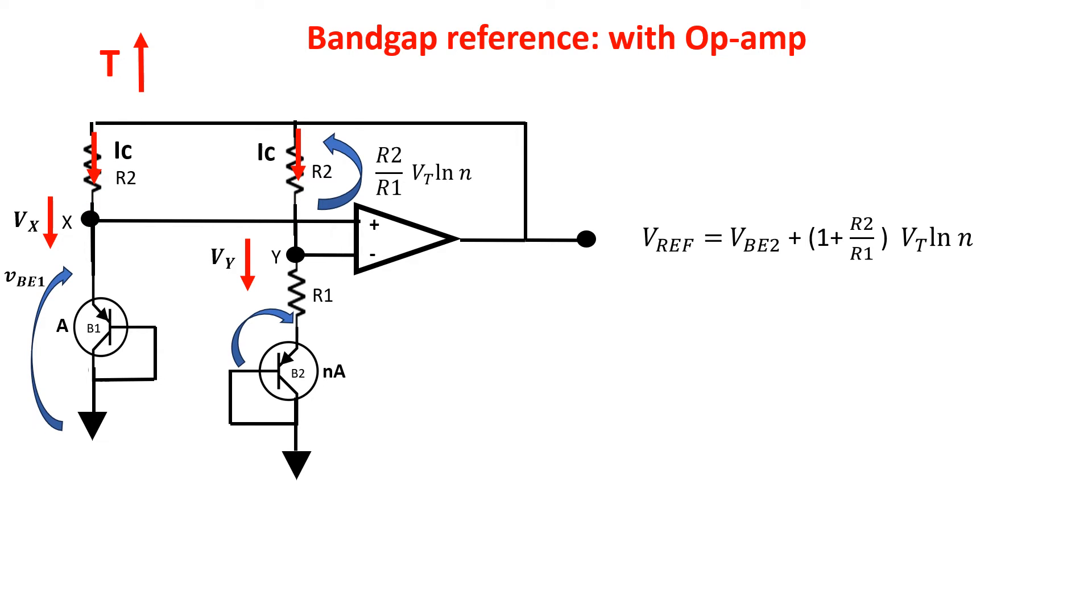The explanation is that VBE2 decreases much more than VBE1, being V2 N times larger than V1, and we have a voltage increase on R1 proportional to the thermal voltage VT. So we have a raise of current which goes to R2 to compensate the Vy dropping, keeping more or less unchanged the output of the op-amp.